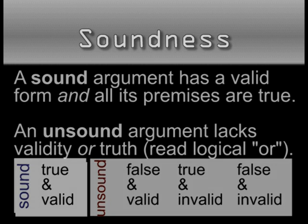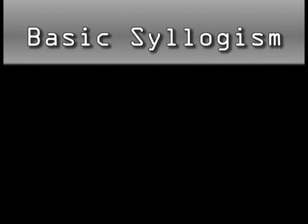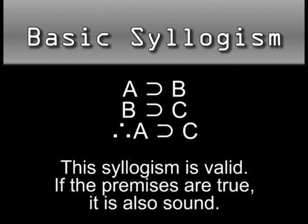A tidbit you may be aware of: our argument structure introduced above — A is B, B is C, so A is C — is called a syllogism. So my 'coffee is food' is a valid syllogism with, I will assert, true premises. If that's all correct, the argument is sound.